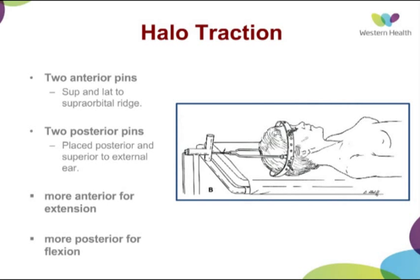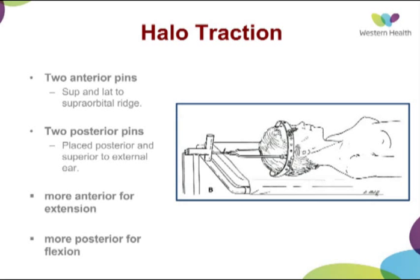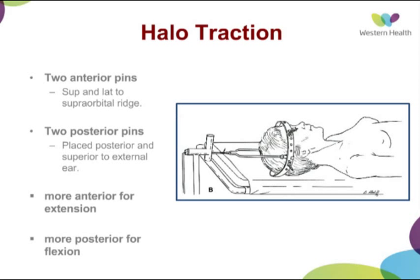The halo traction is another type used for spinal injuries. Two anterior pins are placed superior and lateral to the supraorbital ridge, and there are two posterior superior pins. You can keep traction in neutral, put more anterior pins for extension, or more posterior for flexion. The halo vest combines the halo traction with a body jacket, so the patient is immobilized but can be out of bed — they can walk around — and this is the type most commonly seen in spinal injury patients.